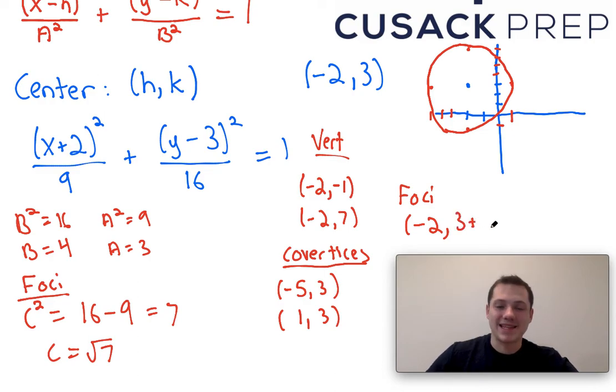but my y coordinate is going to go up by this c value, which is the square root of 7. And it's also going to go down by this c value, which is the square root of 7.